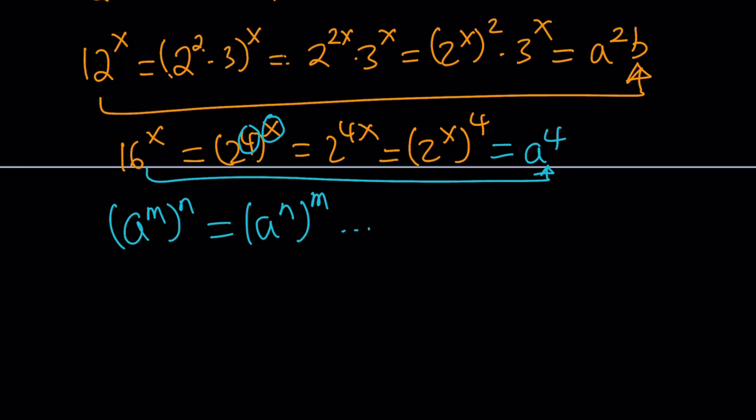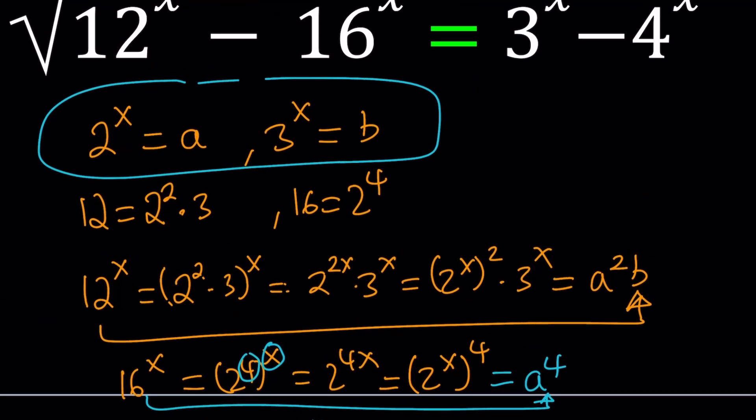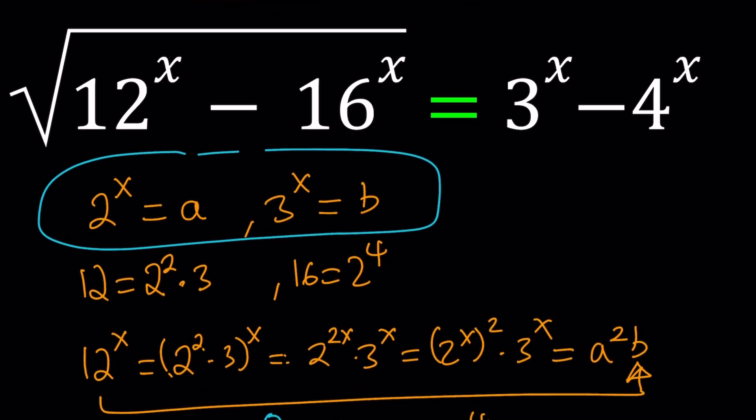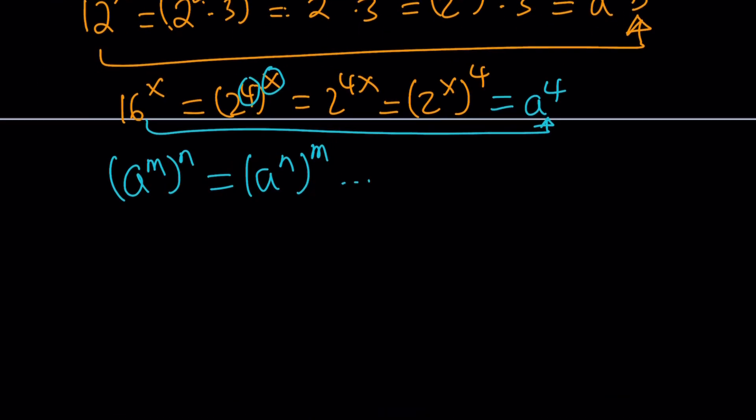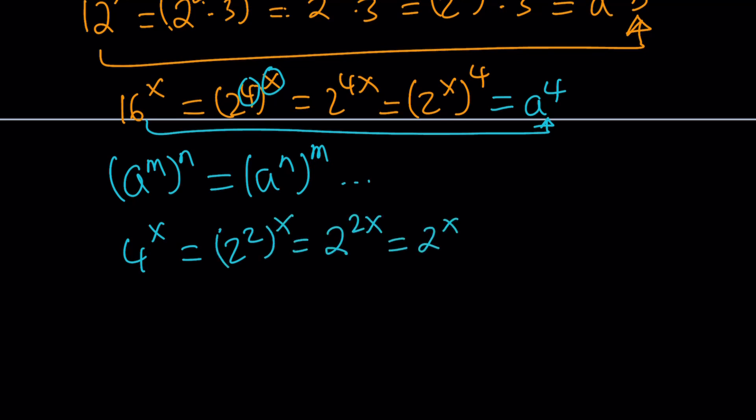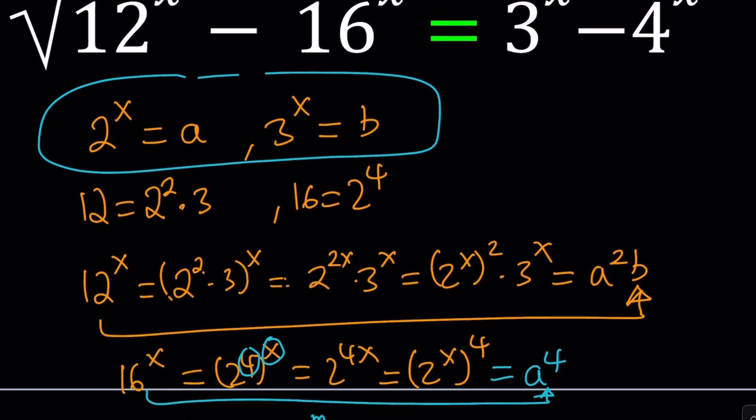Let's go ahead and make the other replacements. The rest is kind of easy. 3 to the x is just going to be b. And 4 to the x is basically 2 to the x squared. Or you can write it as 2 squared to the x. And then that's 2 to the power 2x, which can be written as 2 to the x squared. Or you can think about this as 2 squared, which is basically 2 to the x squared. Now, since 2 to the x is equal to a, this will become a to the 2nd power.